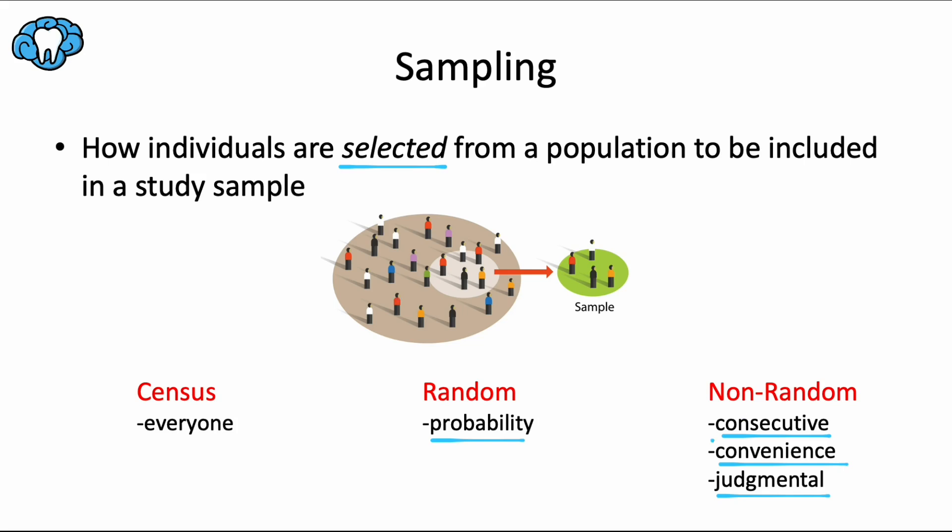There are also other forms of non-random sampling like voluntary response sampling, where volunteers who agree to participate in a study are included in that study, and snowball sampling, where an initial subject is sampled, who then recommends another subject who meets the study criteria, and that person recommends another subject, and so on.